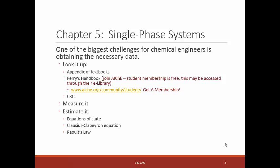So we can look up the data. The appendix of your textbooks are frequently the easiest resource. But if you don't have that, then Perry's Handbook or the CRC are two of my favorite go-tos. The Perry's Handbook is something that is free through AICHE membership. Student membership is free.